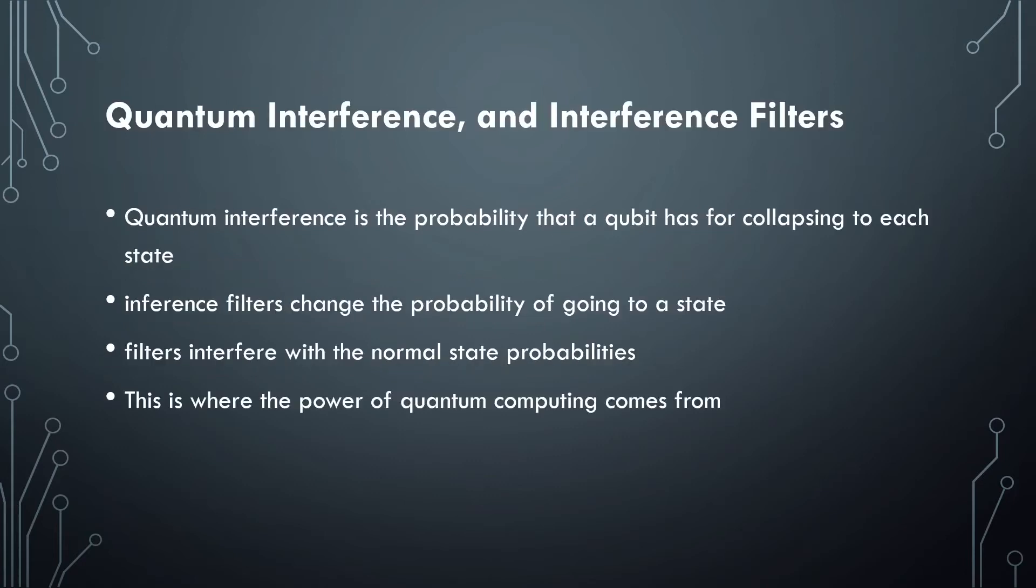Next up is quantum interference and interference filters. Quantum interference is the probability that a qubit has for collapsing to each state. An interference filter can change the probability of going to a state. The name interference filter comes from how the filter interferes with the normal state probabilities. This is where the power of quantum computing comes from.